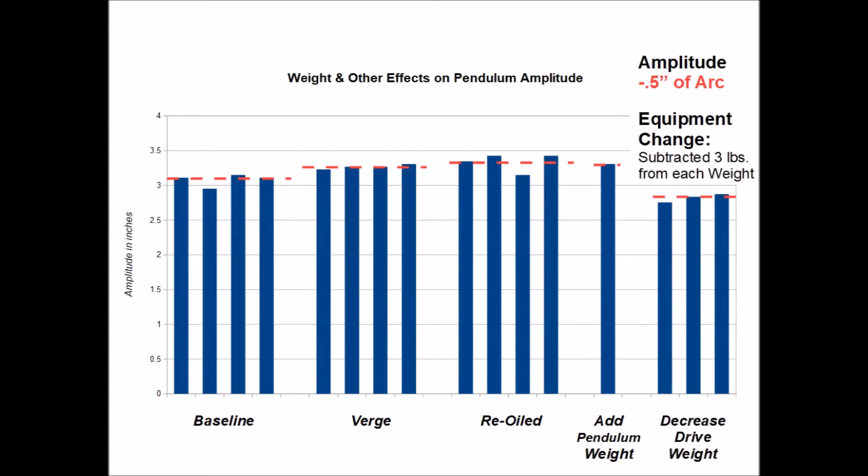Finally, I decreased the weight of the drive weights, 3 pounds on each side from 11 pounds per weight to 8 pounds per weight and that ended up in an amplitude reduction of 0.5 inches, significant.